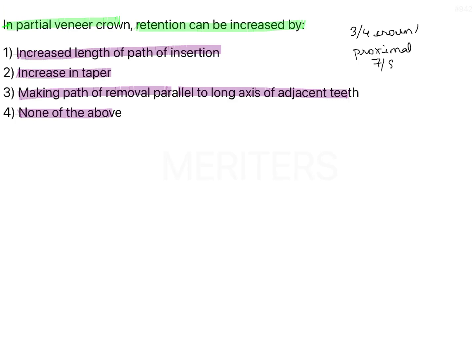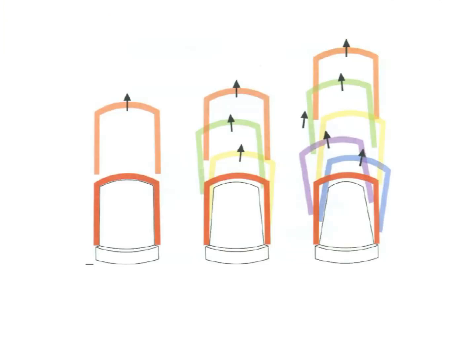or seven-eighth crown. These are not full coverage restorations; they take support only from a part of the entire tooth. When we talk of an entire tooth as a whole assembly, we talk about path of draw. In case of complete coverage crowns, we consider them as cylinders.